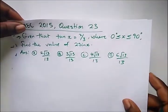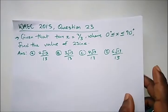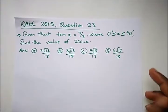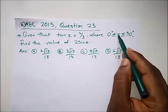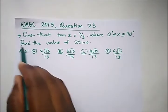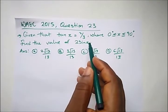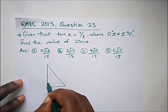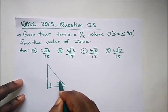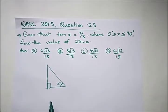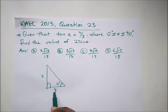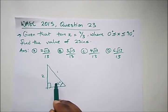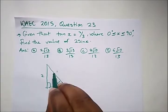We have another question from WAEC 2015, question 23. It says: given that tan x is equal to 2 over 3, where angle x is in a right angle triangle, find the value of 2 sin x. We draw the right angle triangle with angle x. Since tan is opposite over adjacent, the opposite side is 2 and the adjacent side is 3.